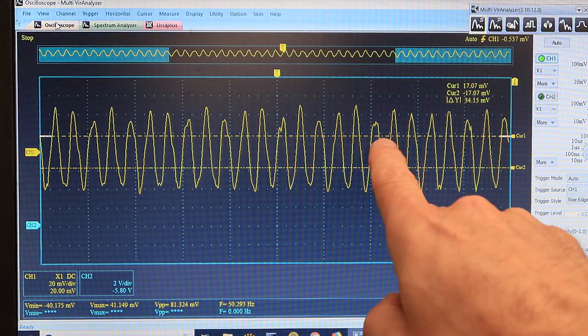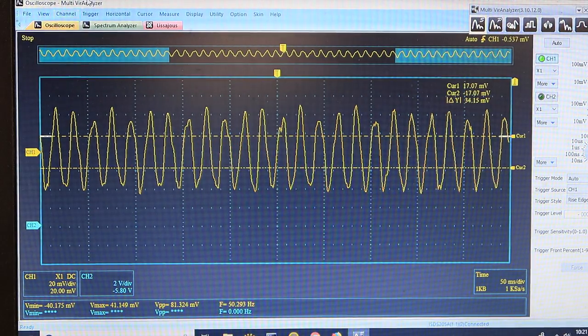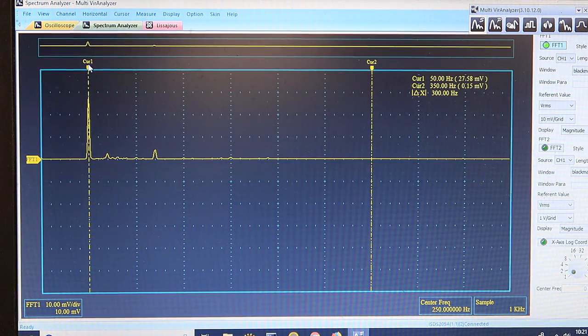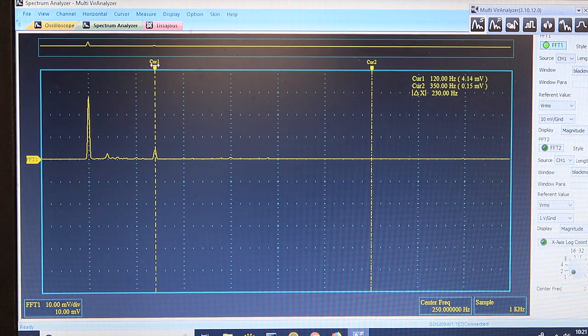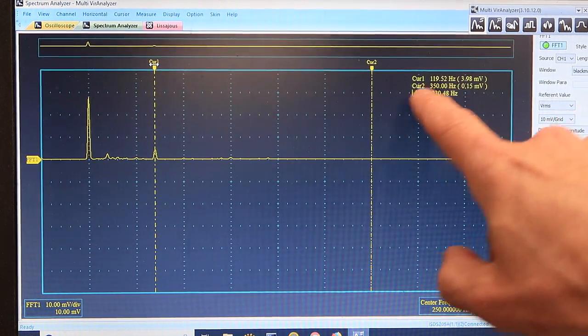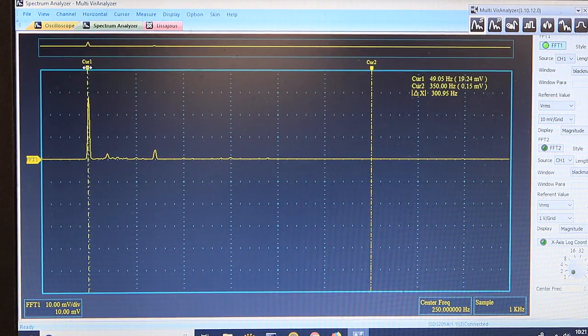Now looking at this waveform, it looks like I have multiple components on here. But with this scope program I actually have a spectrum analyzer feature as well. If I move my cursor around, this little peak here is 120 hertz, so that's twice the line frequency. And then the big peak here is the actual vibration from the motor.